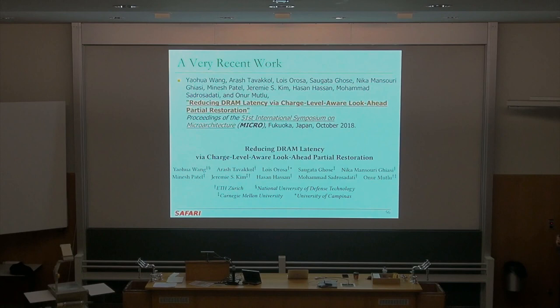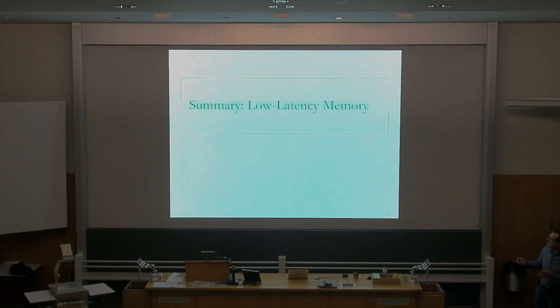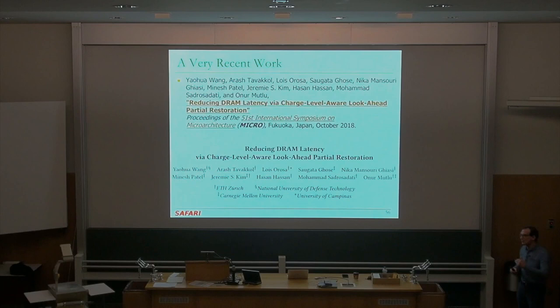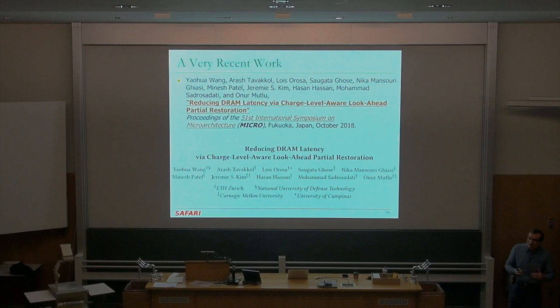There's also a very recent work presented at Micro just a couple of days ago. One of the things it exploits is activation latency reduction, but also restoration latency reduction. If you know you're going to access a particular row again very soon, you can do partial restoration more intelligently — don't restore the charge as much. Restore the charge just enough that you can read the row correctly. The idea is: if you know you're going to access a row soon, don't restore fully — restore just enough.